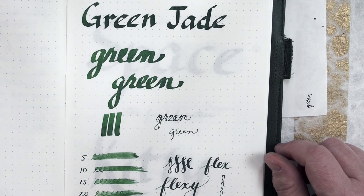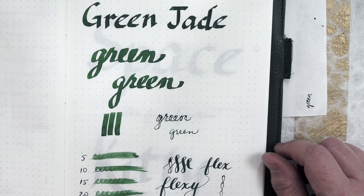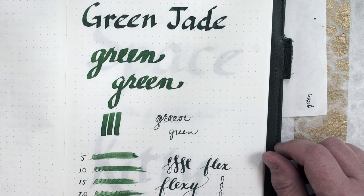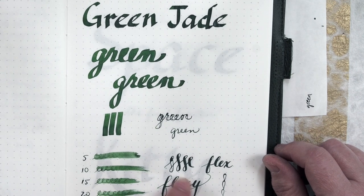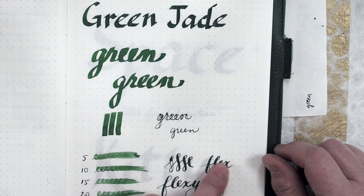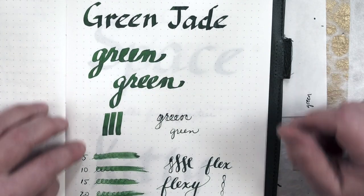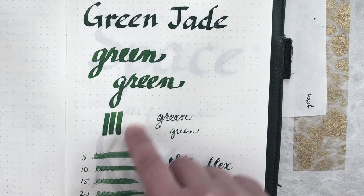Here I played around with a Pilot Parallel 3.8 and some flex writing. Don't really pay attention to the dry times because you can customize that. My inks were very saturated and wet. The shimmer showed up where you laid down a bunch of ink.